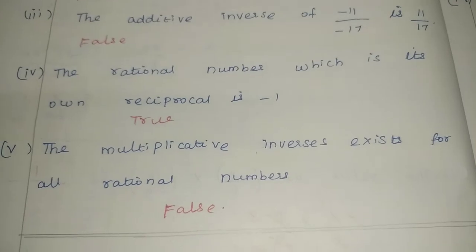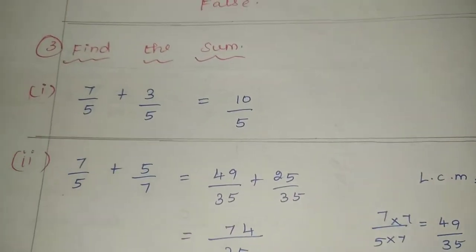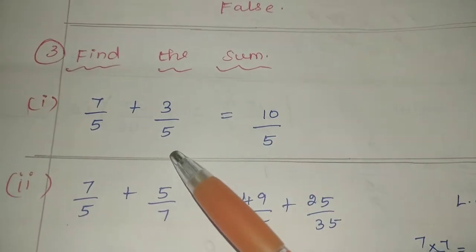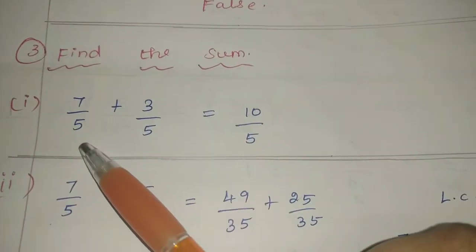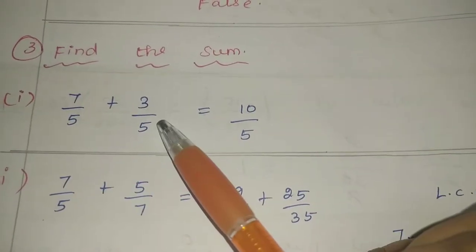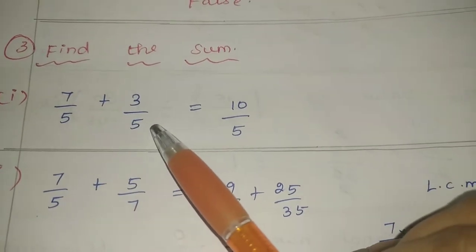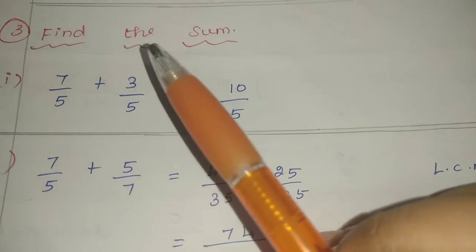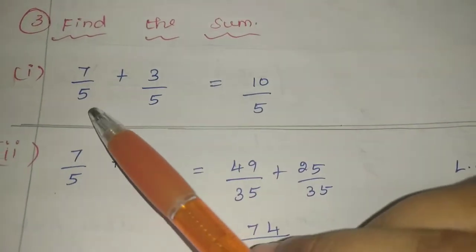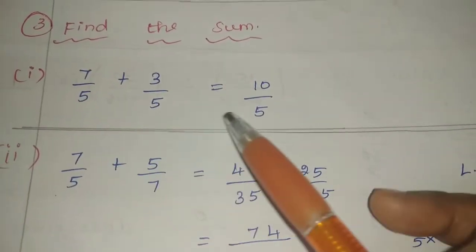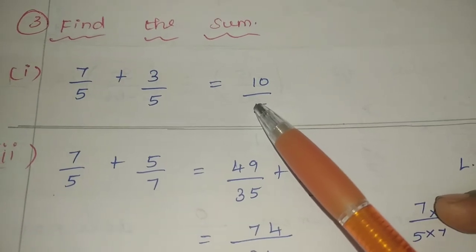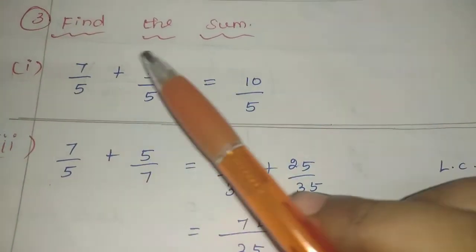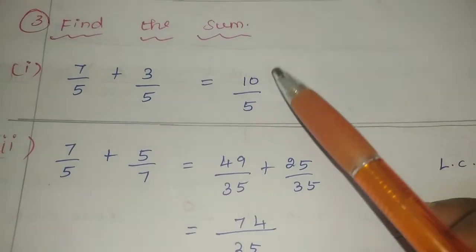Now we will see the third Roman numeral. Find the sums. First step: how do we know the denominator? If the denominators are equal, then we add or subtract. We will see if the denominators are the same. Same denominator — we add the numerators: 7 plus 3 is 10. So 10 by 5, which we reduce.